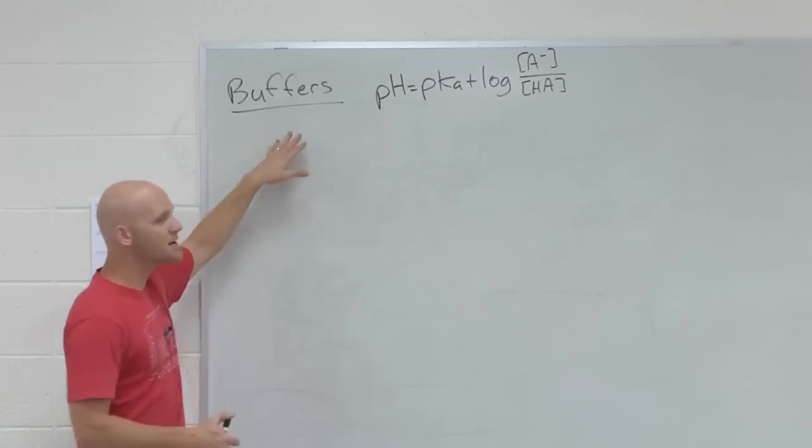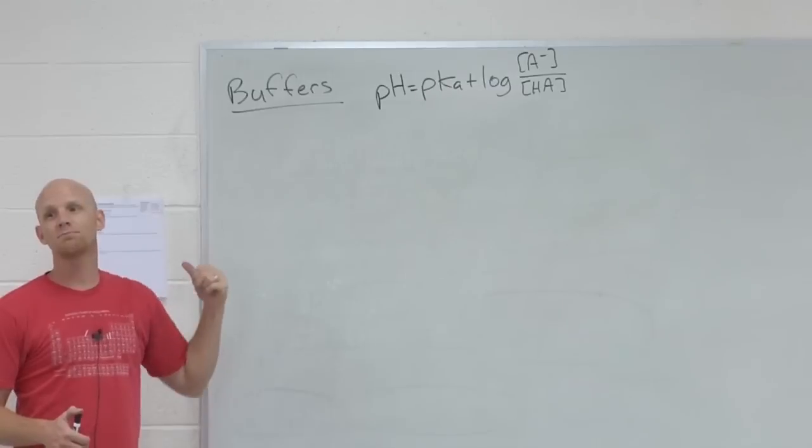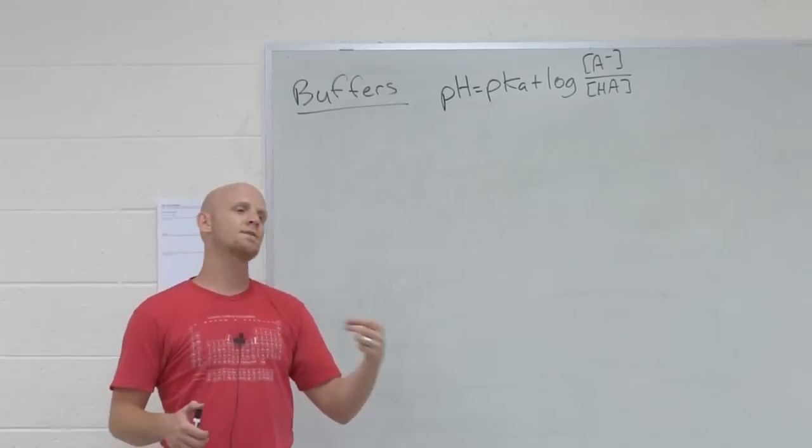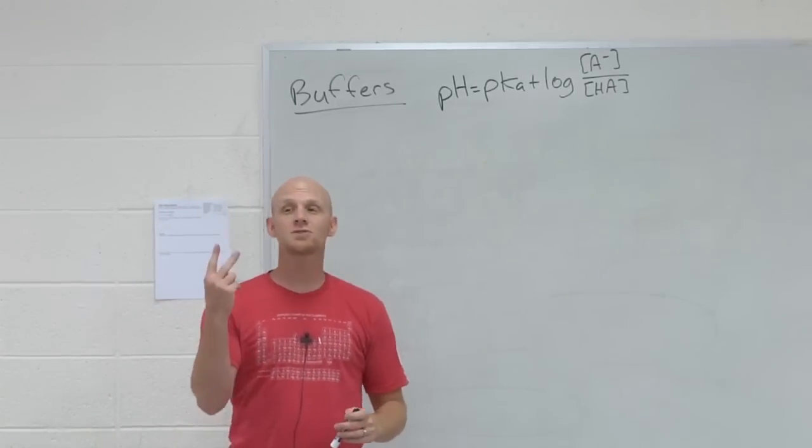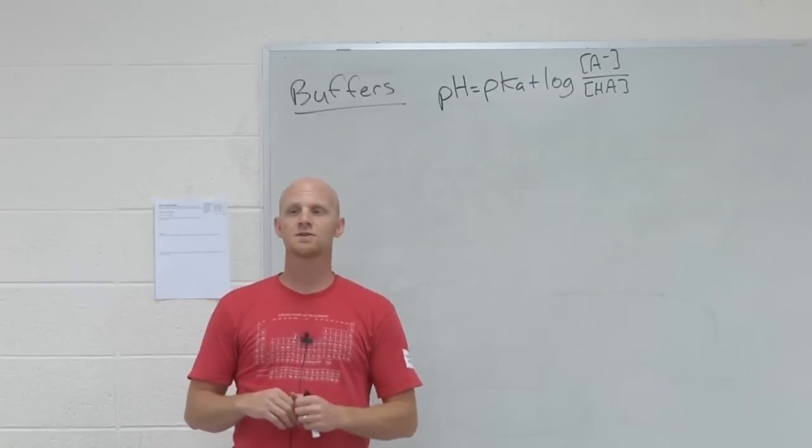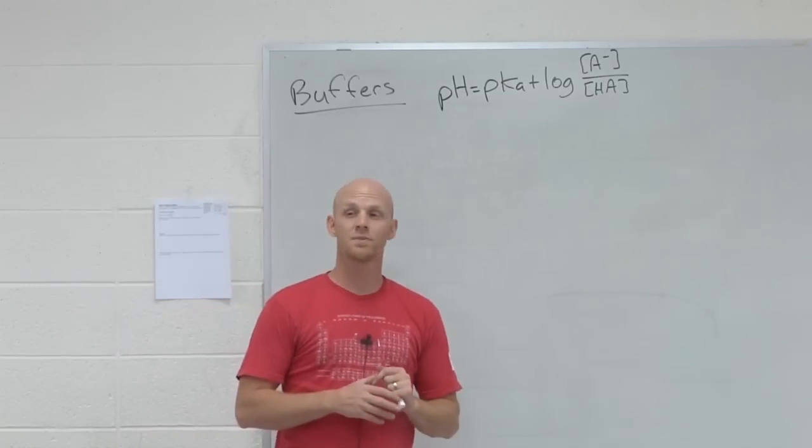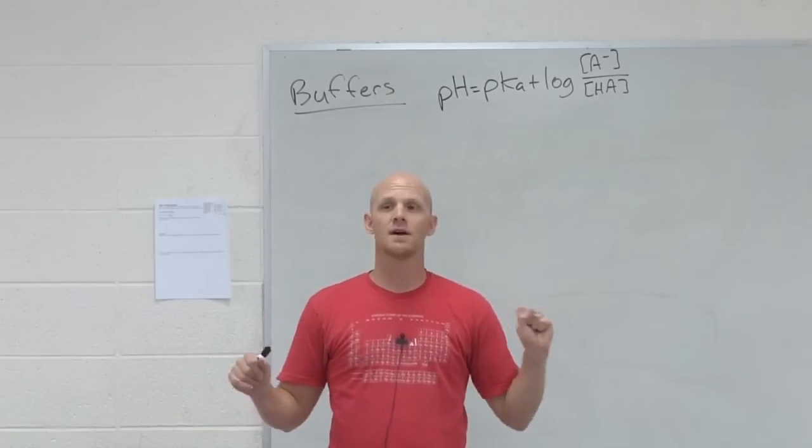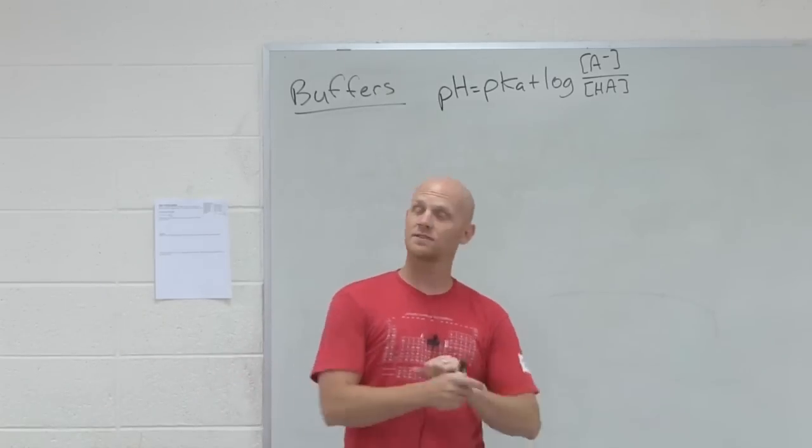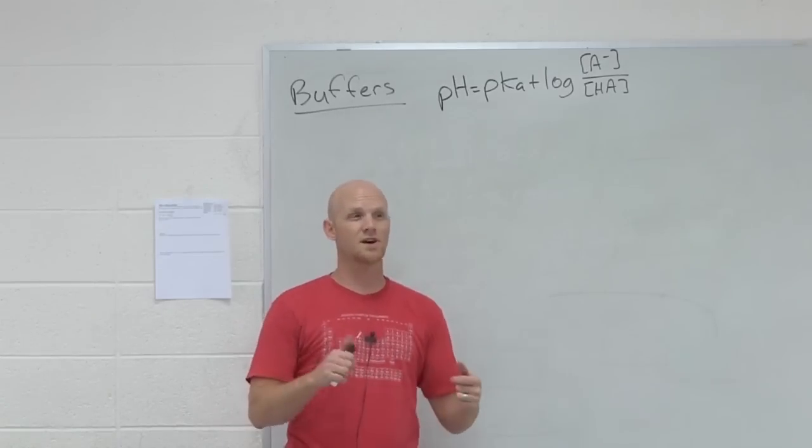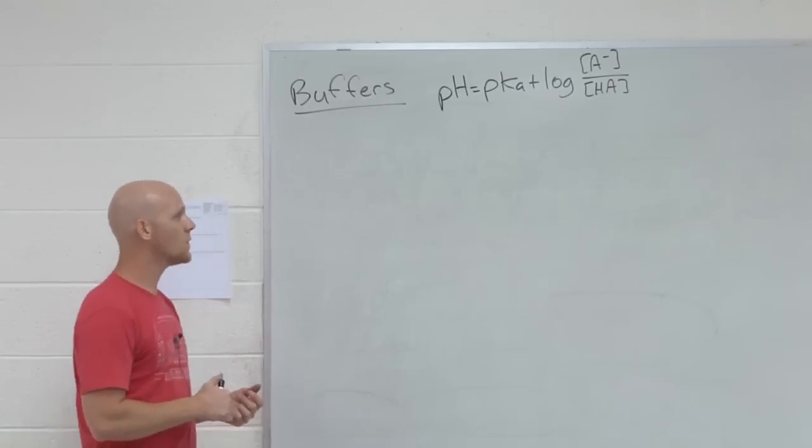So a buffer, resist change in pH, it is made from a weak acid with its conjugate base or a weak base with its conjugate acid. So there are two parts, two components in a buffer. Weak acid with its conjugate base or weak base with its conjugate acid. Notice a strong acid with its conjugate base is not a buffer. A strong base with its conjugate acid is not a buffer. It has to be a weak acid with conjugate base or weak base with conjugate acid to be a buffer.